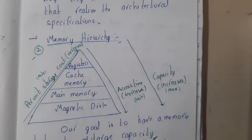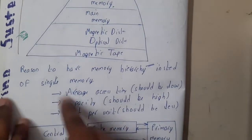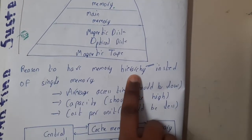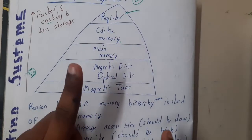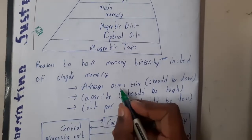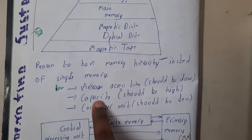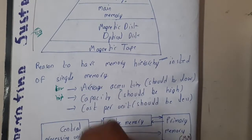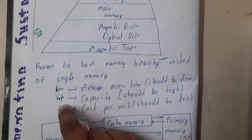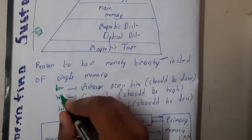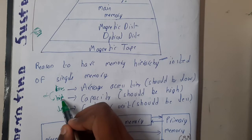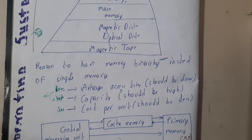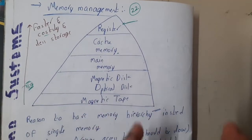Registers are small and store very little, but their access time is really fast — that is why their cost is higher compared to cache, main memory, and magnetic disk. Cost increases as we move up the hierarchy. The reason we use multiple layers of memory rather than a single layer is that we want access time to be low, capacity to be high, and cost to be cheap — but all these parameters cannot be satisfied with a single memory type, since low access time requires low capacity. That is why we maintain a hierarchy.